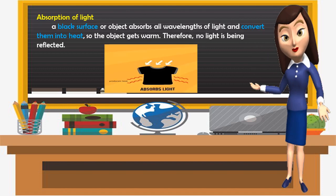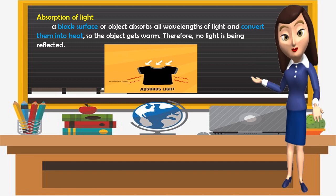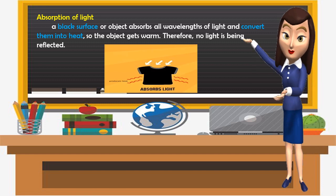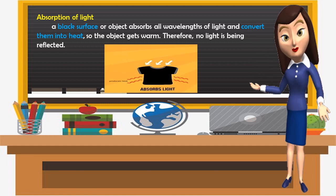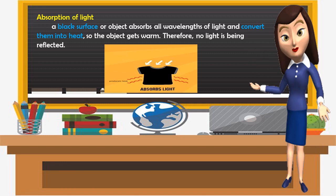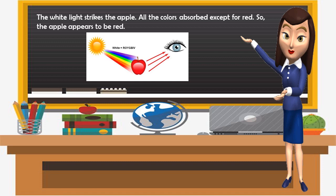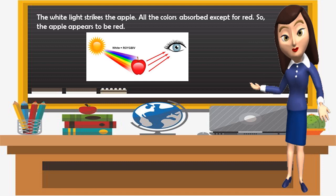Now let's go to absorption of light. A black surface or object absorbs all wavelengths of light and converts them into heat, so the object gets warm — therefore, no light is reflected. As you can see in the picture, the black t-shirt absorbs all light. When white light strikes the apple, all colors are absorbed except red, so the apple appears to be red.